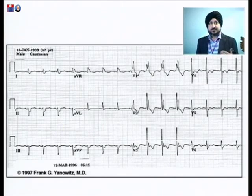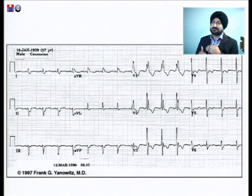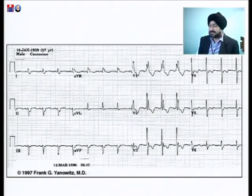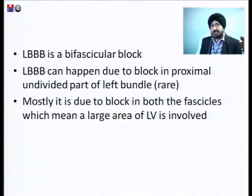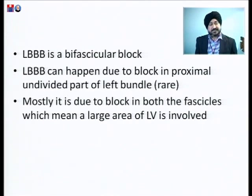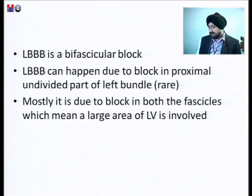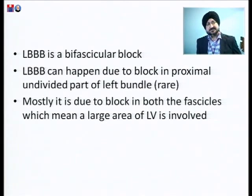This concept helps understand incomplete LBBB — it is a gradually worsening conduction in that bundle branch, appearing as incomplete bundle branch block first and then turning into complete bundle branch block. Left bundle branch block itself is a bifascicular block, involving both the left anterior and posterior fascicles. In most cases it is due to block in both fascicles, meaning a large area of left ventricle is involved — that is why it is associated with worse prognosis and heart failure.